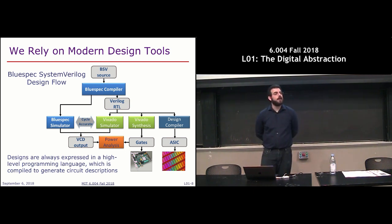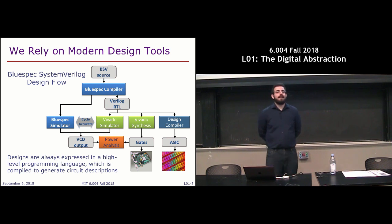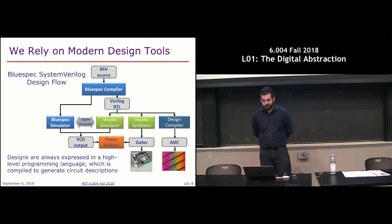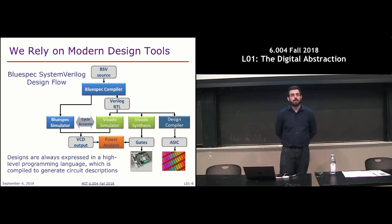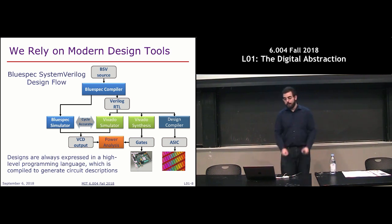We will use the BlueSpec hardware description language. BlueSpec is a language that was designed by Arbin at MIT about 15 years ago. It has two nice benefits. First, it has a strict type system that avoids lots of silly mistakes — the compiler will complain at you often, but when the thing actually compiles, it typically just works. Second, BlueSpec has a nice model for concurrency, which is very important because hardware design is really all about parallelism. You have a billion transistors in each chip, so BlueSpec gives you a nice foundation to design correct parallel systems.